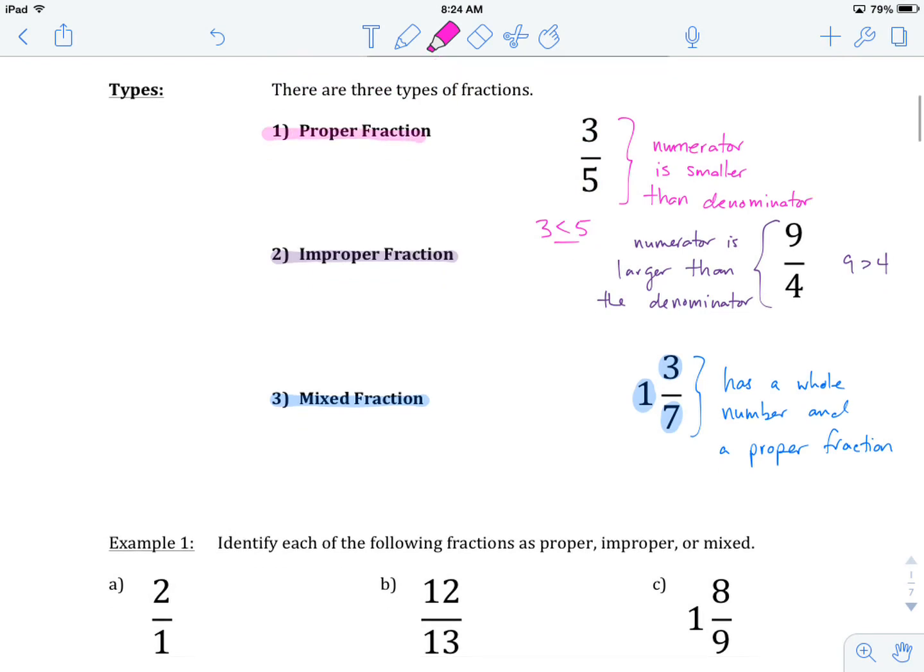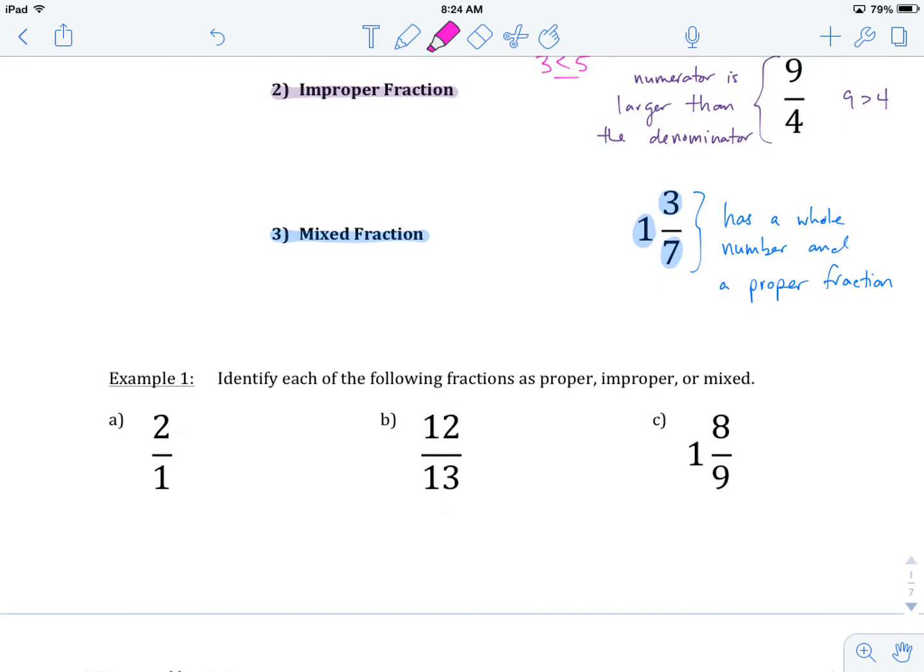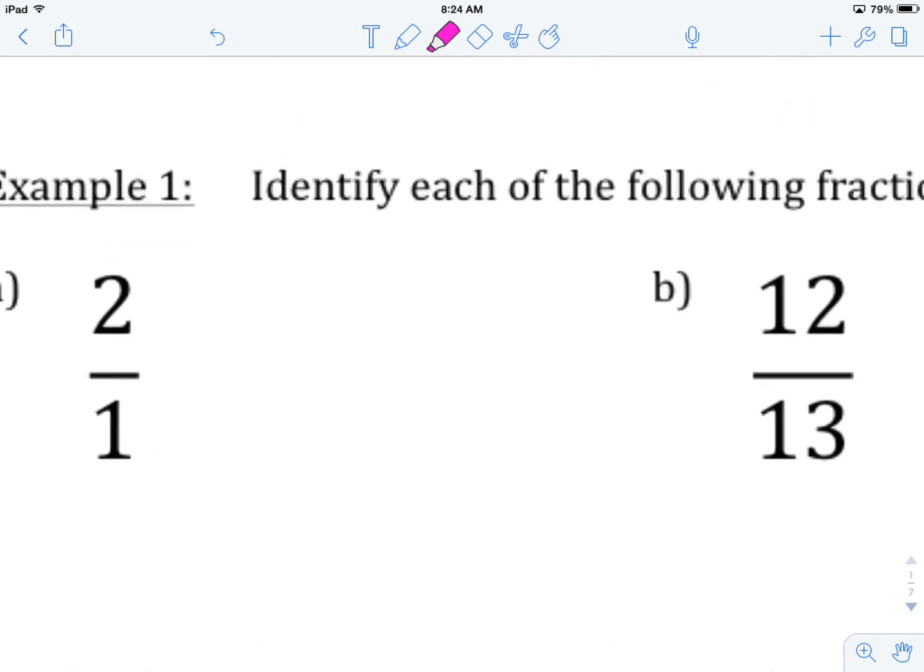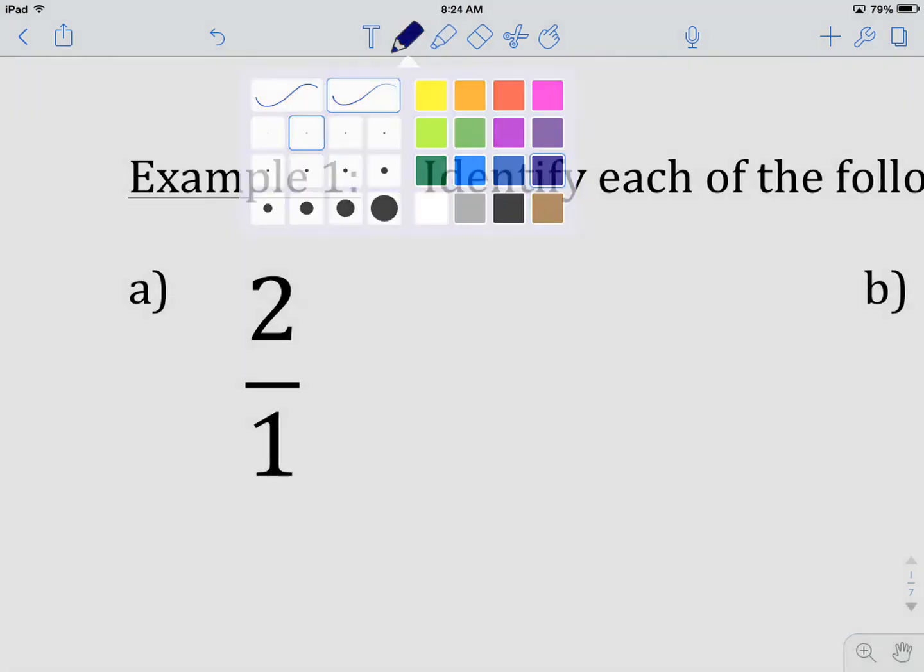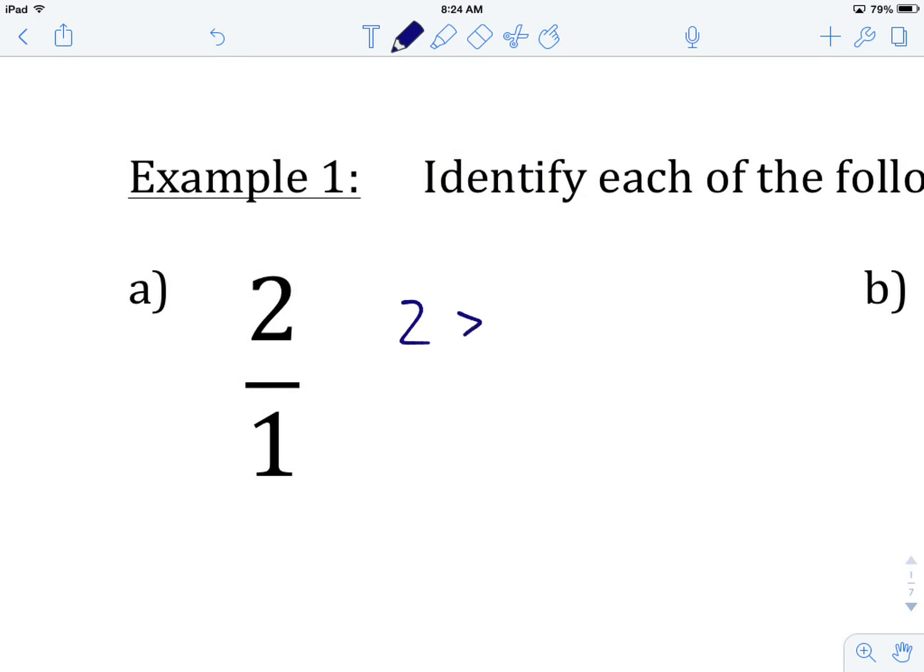Let's jump down and try a few of these examples together. Identify each of the following fractions as proper, improper, or mixed. Our first example is two over one. The question we want to be asking ourselves when we look at this: what's the relationship between the numerator and the denominator? Is the numerator bigger or smaller? In this case, two is larger than one. Therefore, what we have here is an improper fraction.